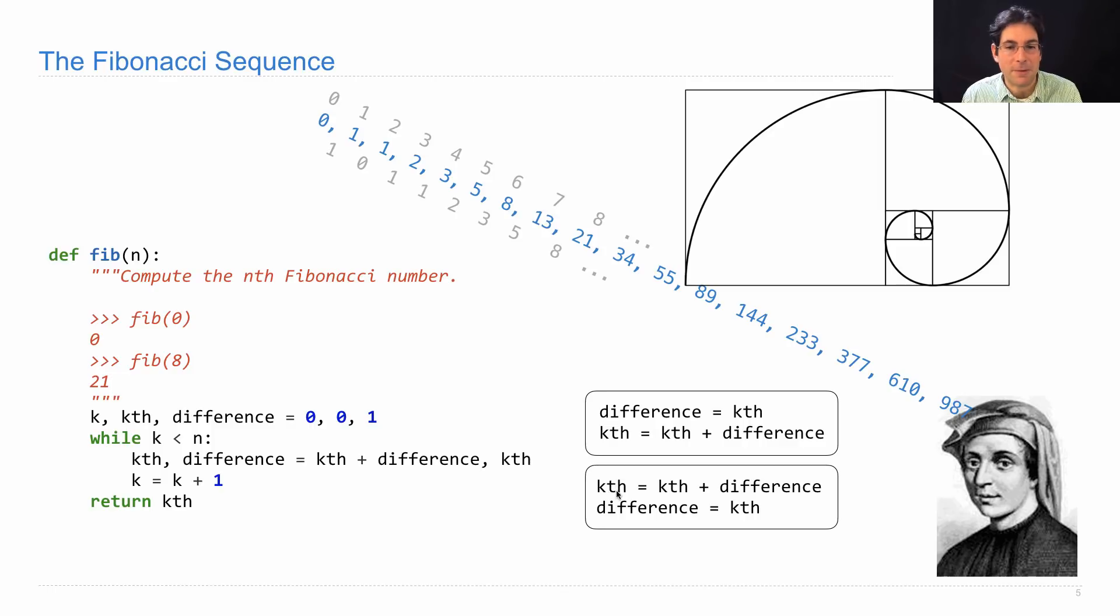It's also different from this version where we try to update the Fibonacci number first. Instead of difference keeping track of the previous Fibonacci number, it keeps track of the current Fibonacci number, which means these are always the same. So what you get with this version is just numbers doubled over and over again: 1, 2, 4, 8, etc.